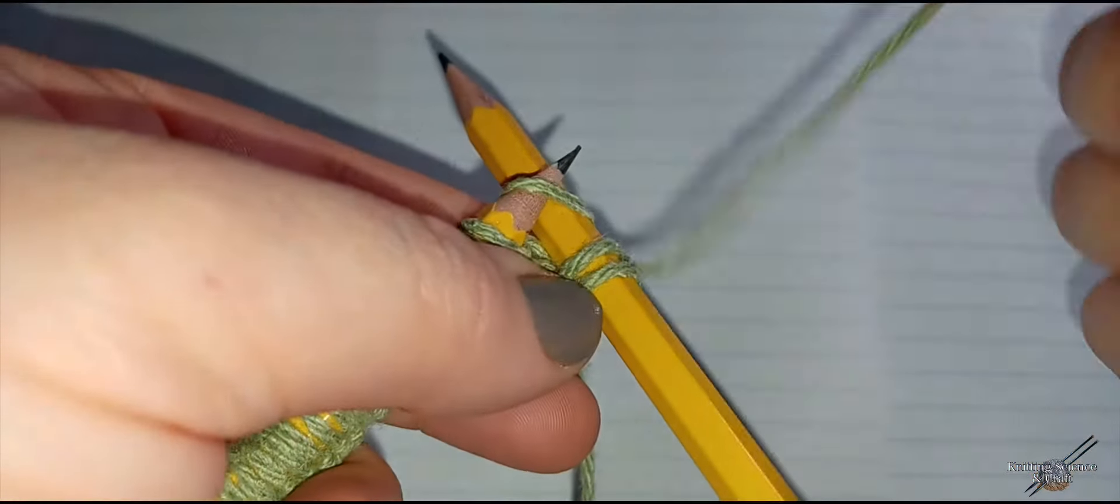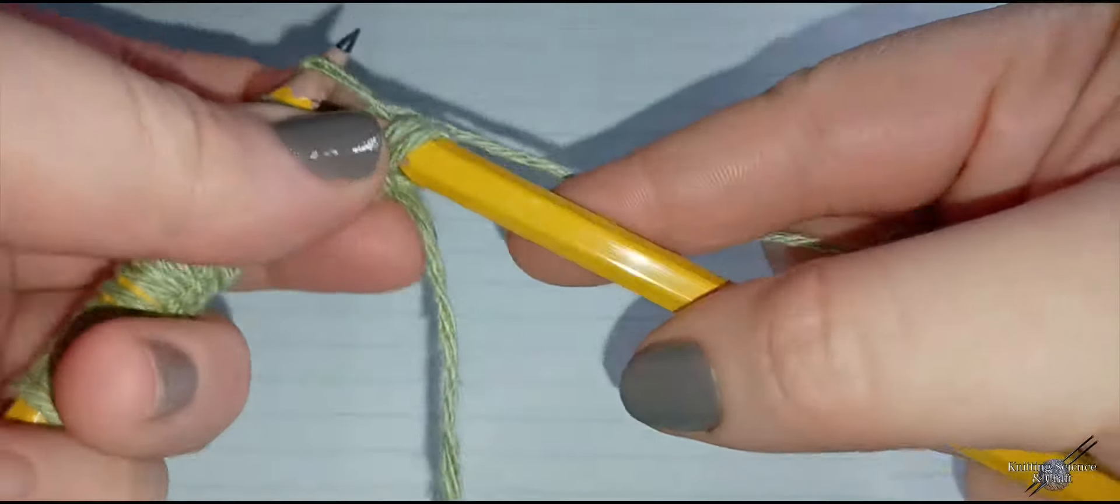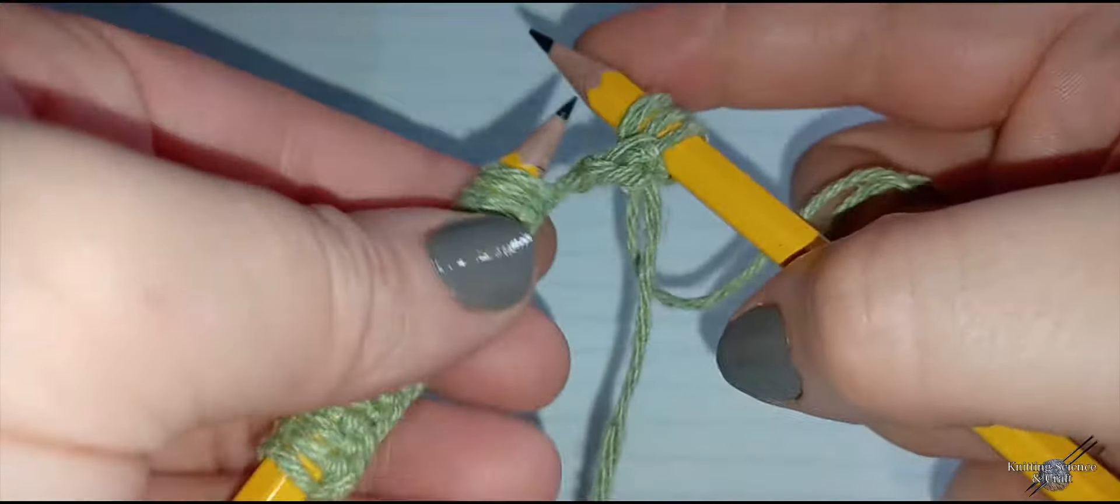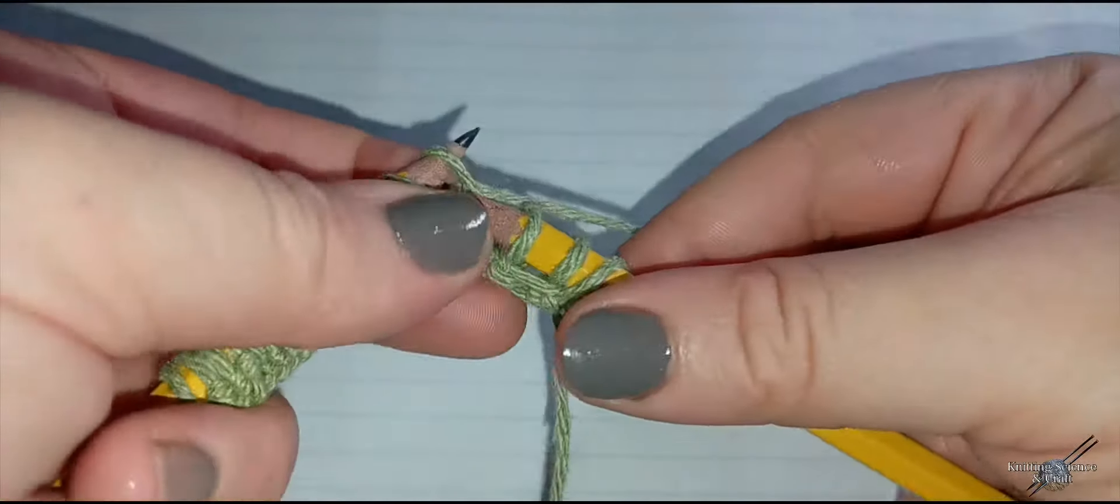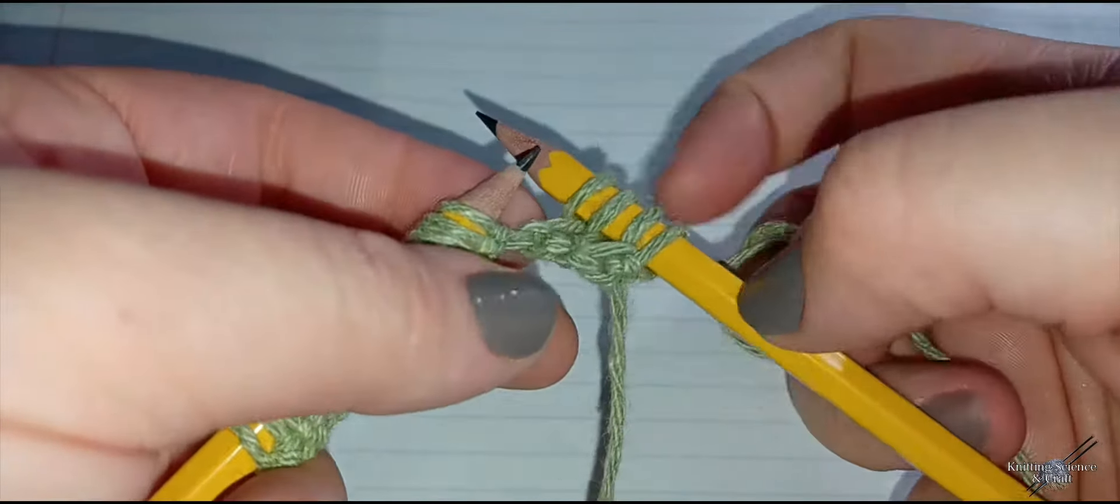The type of stitch I'm using is stockinette stitch, and that consists of your first row being a knit row and your second row being a purl row. And you just repeat that pattern in the same manner.